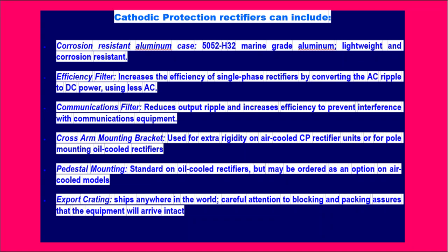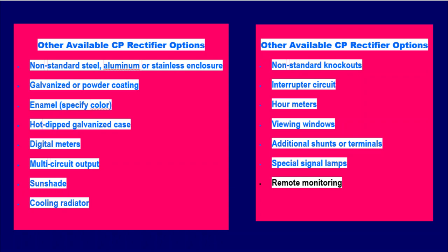Additional rectifier options include: 4. Cross Arm Mounting Bracket — used for extra rigidity on air-cooled CP rectifier units or for pole mounting oil-cooled rectifiers. 5. Pedestal Mounting — standard on oil-cooled rectifiers. 6. Export Crating — ships anywhere in the world with careful attention to blocking and packing to ensure equipment arrives intact. 7. Non-standard steel, aluminum or stainless enclosures. 8. Galvanized or powder coating, enamel, specify color, hot-dipped galvanized case, and digital meters.